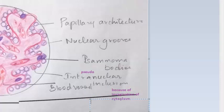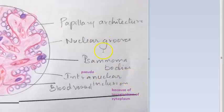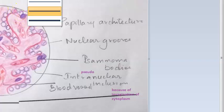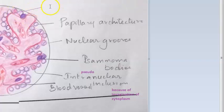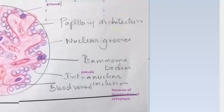The clear cells will have what is called ground glass appearance, also referred to as orphan Annie appearance of the nucleus, because the chromatin has dispersed within the nucleus.